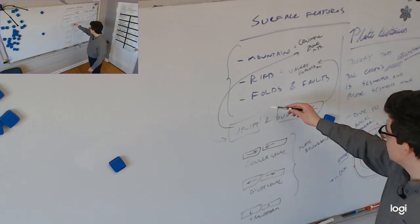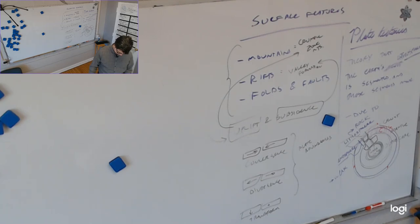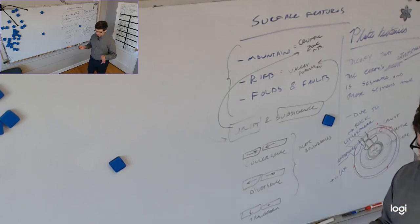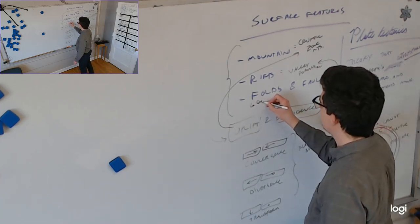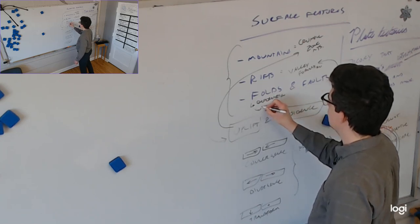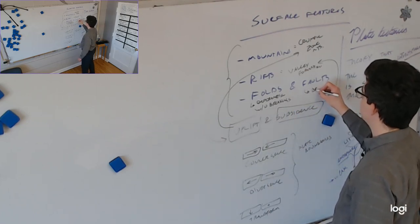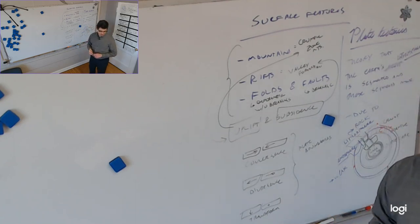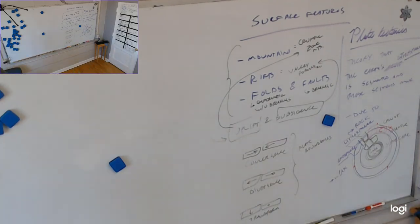All three plate boundary types can be associated with folds and faults. The difference: folds happen when rock deforms but does not break — that's deformation without breaking. Faults happen when the rock does break. The kinds of stress driving this are compression, tension, and shear.